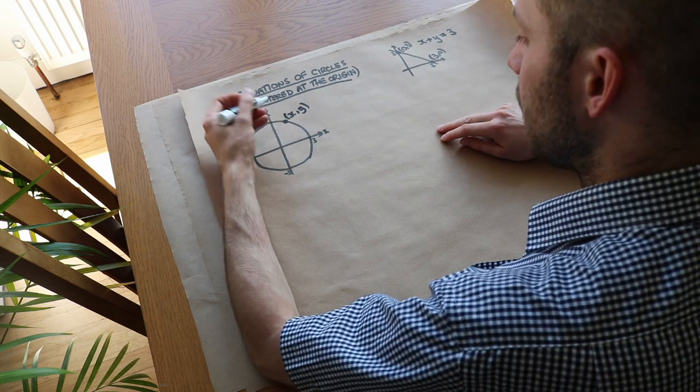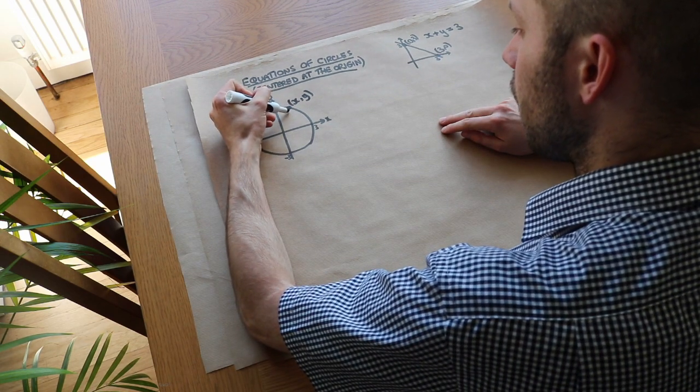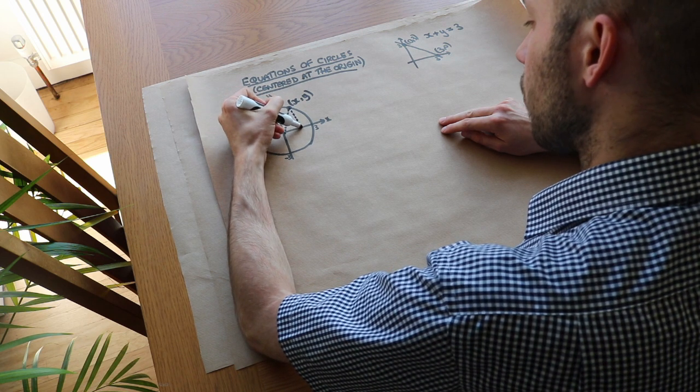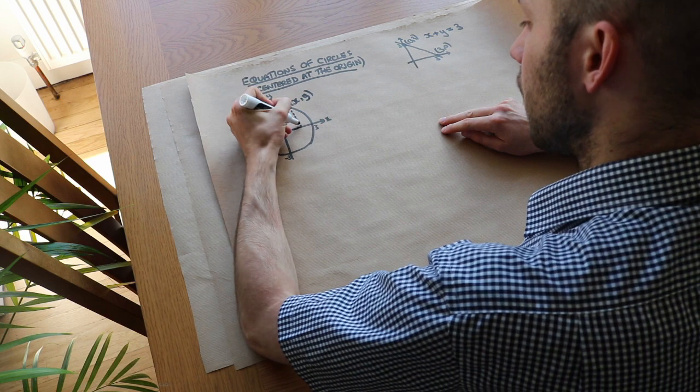So the way we do it is we actually form a right-angled triangle. So if I draw a line like this and I draw a line down and across like that, so we form a right-angled triangle.